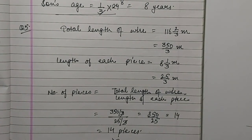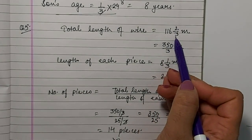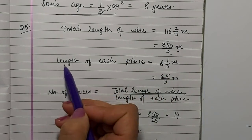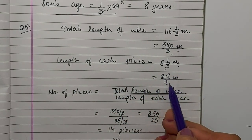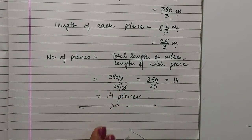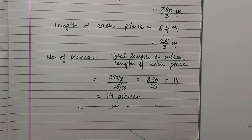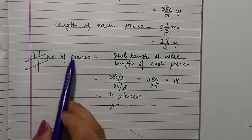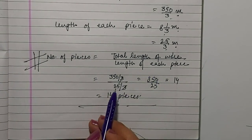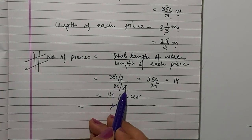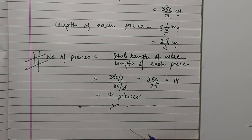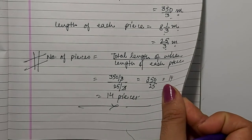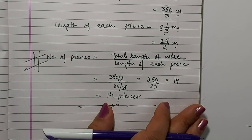Question 5: A 116 and 2 by 3 meter long wire is cut into equal pieces measuring 8 and 1 by 3 meters each. How many pieces are there? Total length = 116 2 by 3 = 350 by 3 meters. Length of each piece = 8 1 by 3 = 25 by 3 meters. Number of pieces = total length over length of each piece = 350 by 3 over 25 by 3. The 3s cancel: 350 over 25 = 14. The wire is cut into 14 pieces. This completes Exercise 1.3 and Chapter 1.